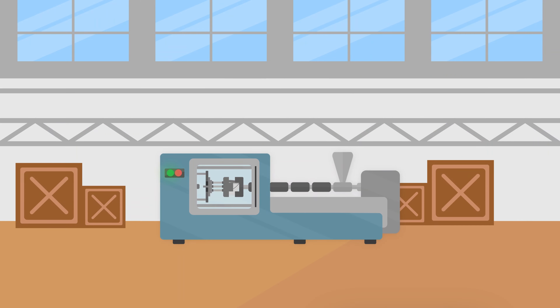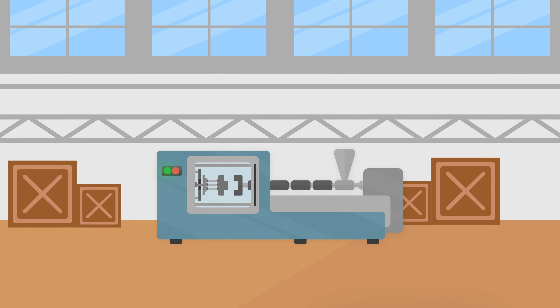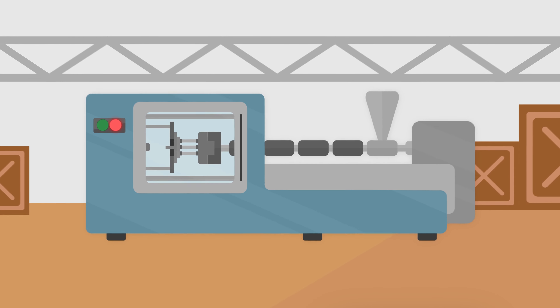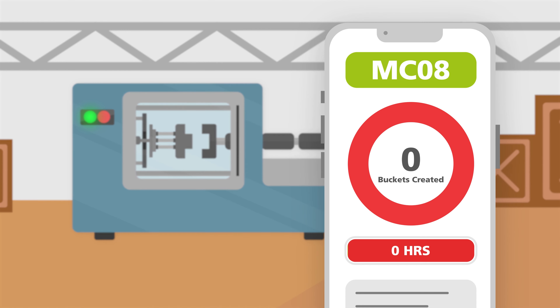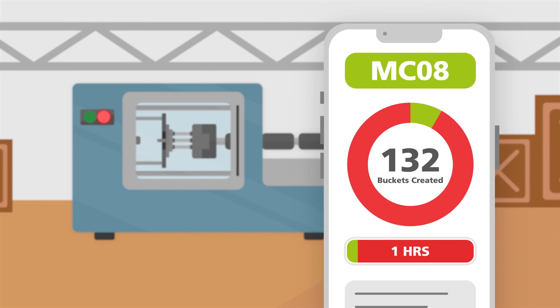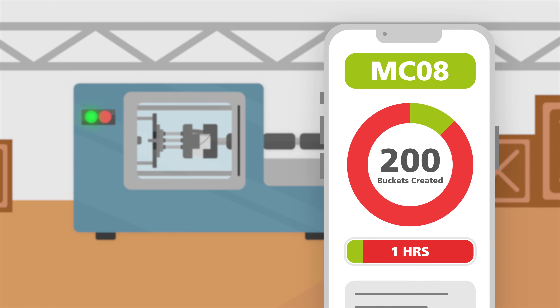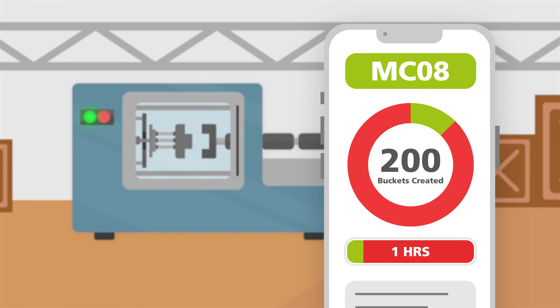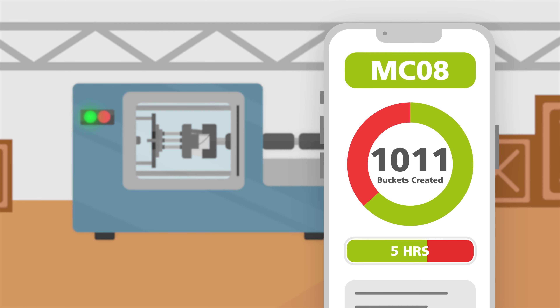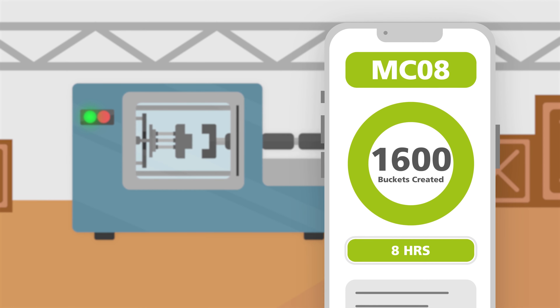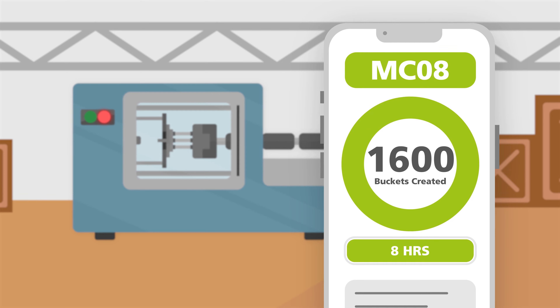Let's say you run a process which makes buckets and that your machine is capable of producing 200 buckets per hour. Across an eight-hour shift you should be able to make 1,600 buckets.